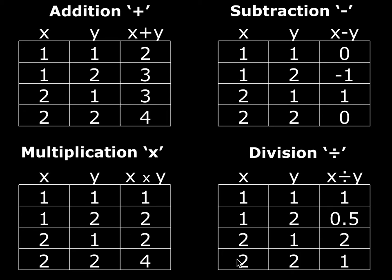Notice that different arithmetic expressions symbolize different functions. Inputting one and one to addition gives two, but to subtraction gives zero. Also notice that for some functions order matters. Addition and multiplication are order-invariant — you get the same output regardless of input order. But subtraction and division aren't: one divided by two gives 0.5, but two divided by one gives two.